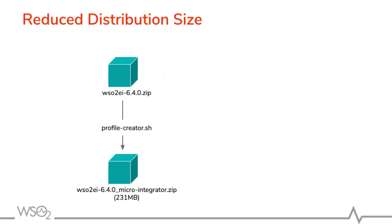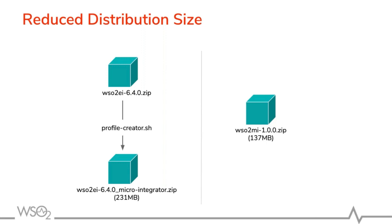Distribution size is an important parameter when working with cloud-native technologies — a smaller size helps you quickly scale up and down. Previously the Micro Integrator came inside the Enterprise Integrator zip, and after running the profile creator, the scaled-down version was 231 MB. In this release, we have separated it out, done some optimizations, and reduced it to 137 MB — more than a 40% reduction. This helps you pull artifacts quickly and deploy them in different environments.